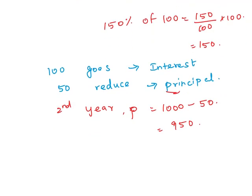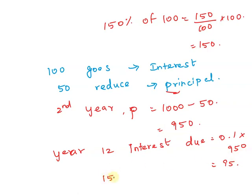For year 12, the interest due equals 0.1, that is 10% times 950, which equals 95. Similarly, 150% of 95 equals 142.5.